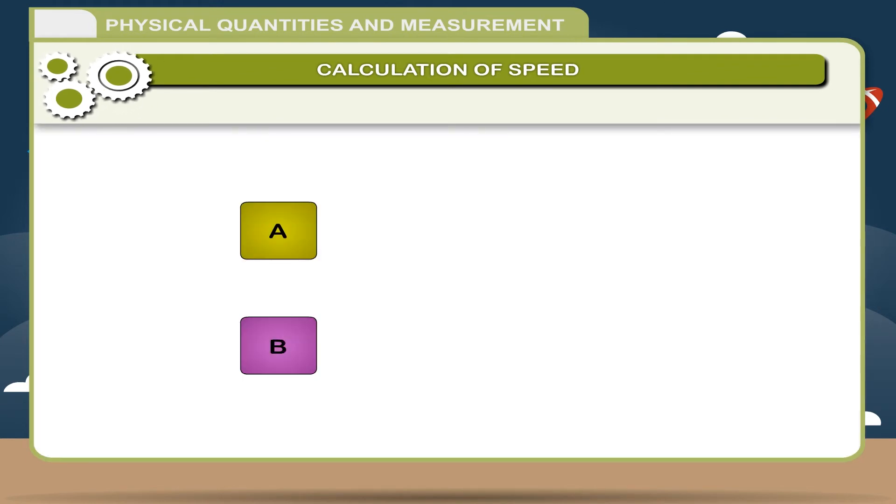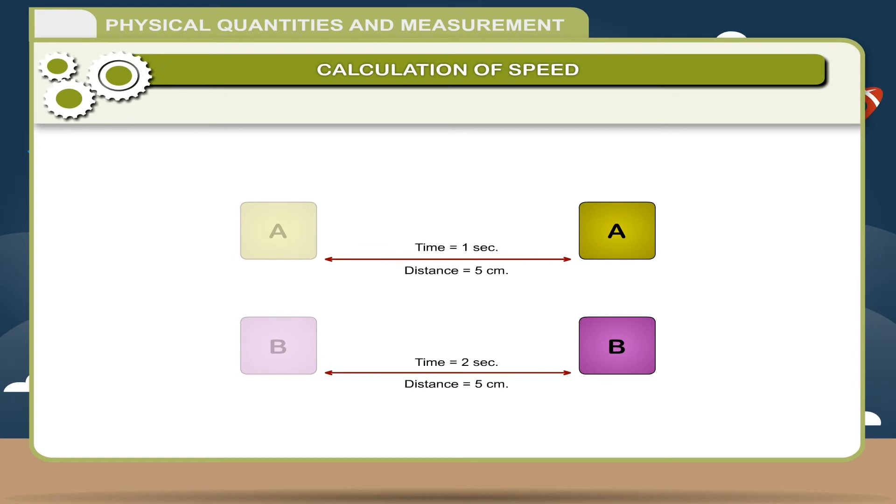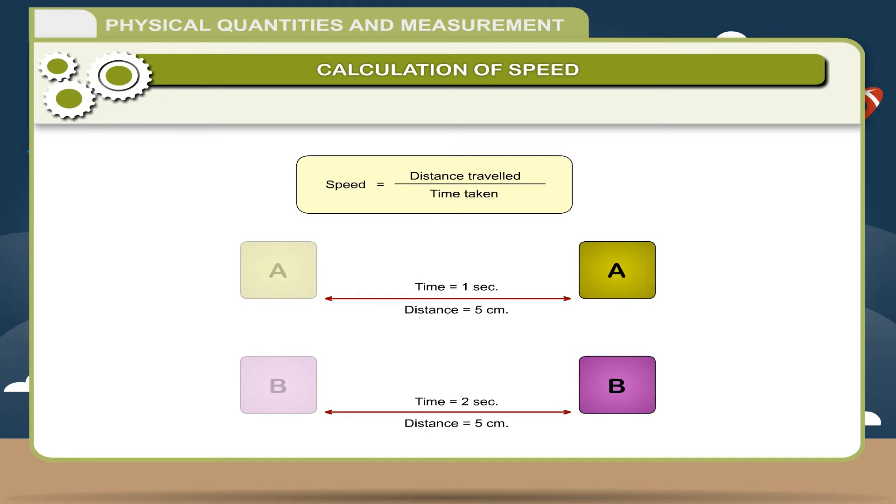Different objects may take different amounts of time to cover a given distance. Thus, speed is defined as the distance traveled by an object per unit time. Speed = distance traveled / time taken.